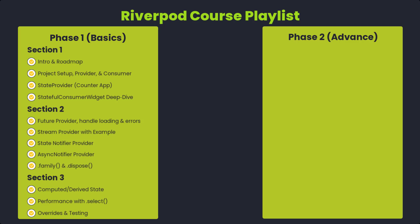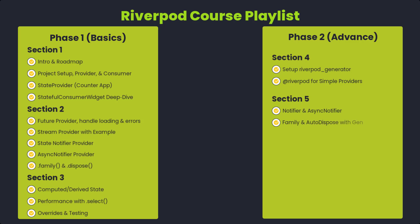Phase two covers code generation with the Riverpod Generator package (@riverpod annotation). Section four covers generating basic providers using the generator. Section five covers Notifier and AsyncNotifier with code generation, plus family and auto dispose. Section six covers a real-world full To-Do app example, testing and debugging generated providers, and next steps in the Riverpod ecosystem — how to use other packages alongside Riverpod.